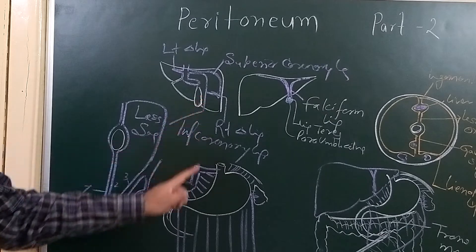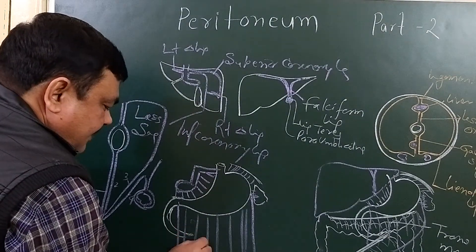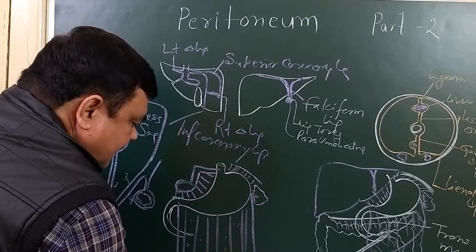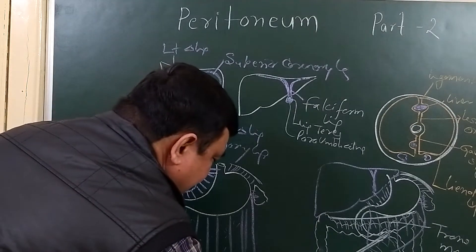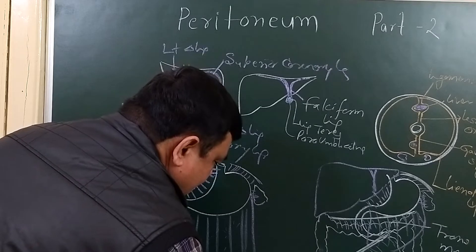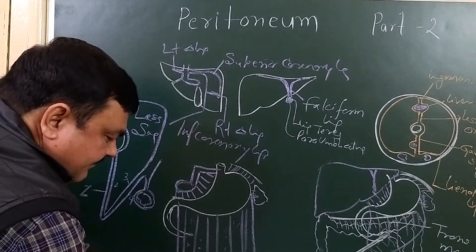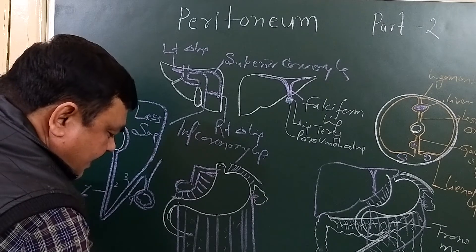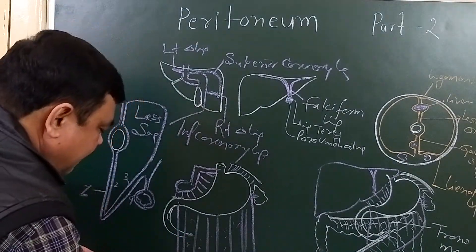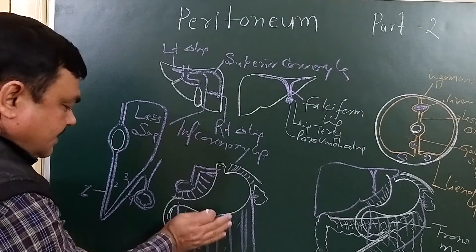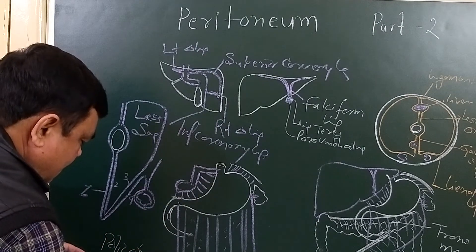The fold of the peritoneum here forms the lesser omentum and this is the greater omentum. In the greater omentum, it contains an abundant amount of fat and also patches of macrophages — these are known as milky spots. These macrophages control infection: at the site of infection, these macrophages reach and seal that area to prevent further spread of infection. That is why the greater omentum is known as the policeman of the abdomen.